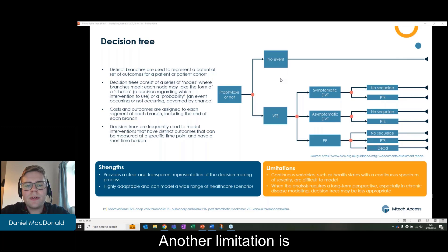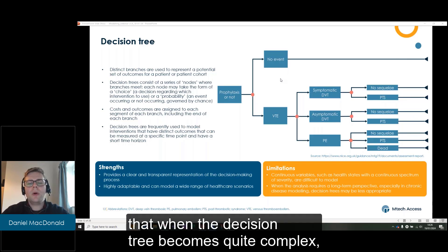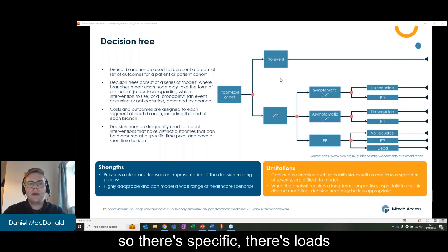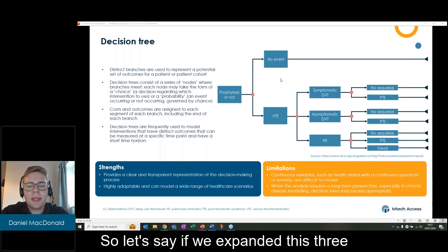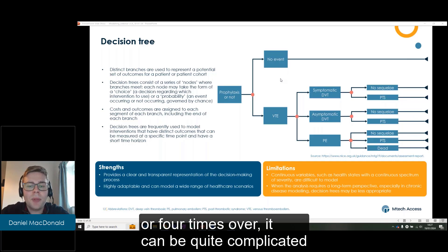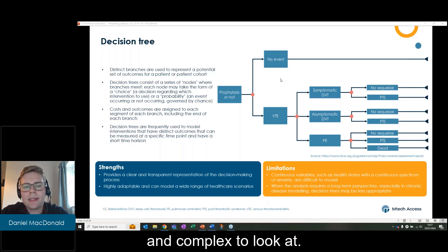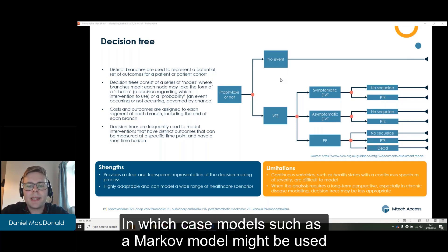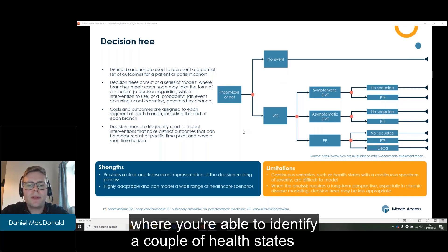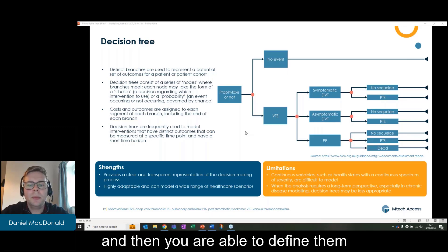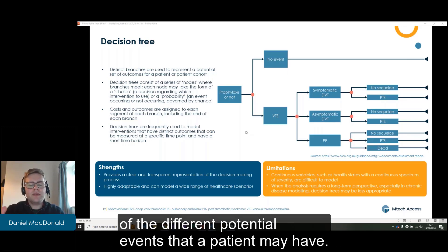Another limitation is that when the decision tree becomes quite complex, there's loads of different branches that are required. So if we expanded this three or four times over, it can be quite complicated and complex to look at, in which case models such as a Markov model might be used where you're able to identify a couple of health states and then cover each of the different potential events that a patient may have.